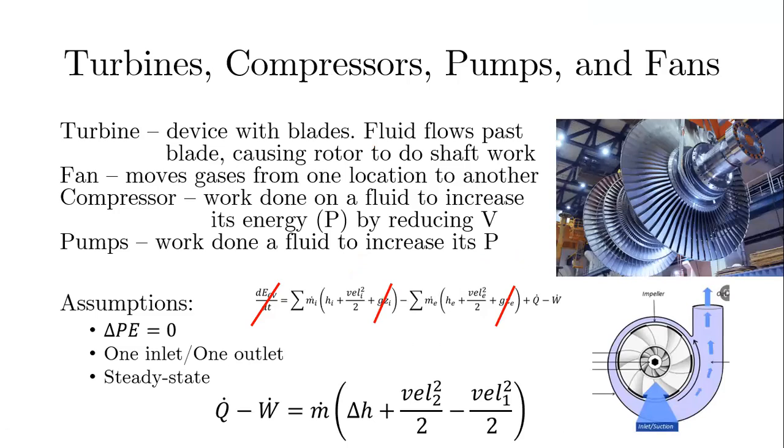These classes of devices, turbines, compressors, pumps, and fans all have moving parts, and they're used for different purposes, but their design is similar enough that we can have the same assumptions for all of them. For all of those, we would assume there's no great change in height. If we assume one inlet and one outlet as steady-state, we arrive at the equation underneath. Basically, you only have to account for the macroscopic kinetic energy as well as the enthalpy, and then the Q and the W on the other side.